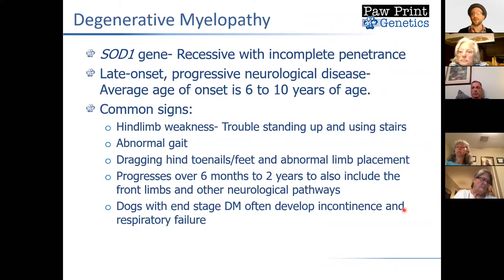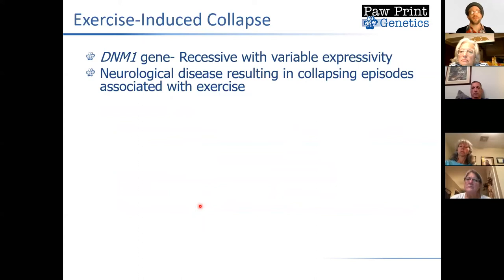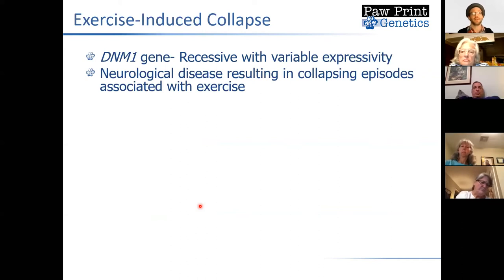There's another question about IVDD — we'll be getting to that here in a little bit. The third of the five diseases we can test for in the Boykin is a condition known as exercise-induced collapse. This is also a neurological disease, and it results in collapsing episodes most commonly associated with exercise.